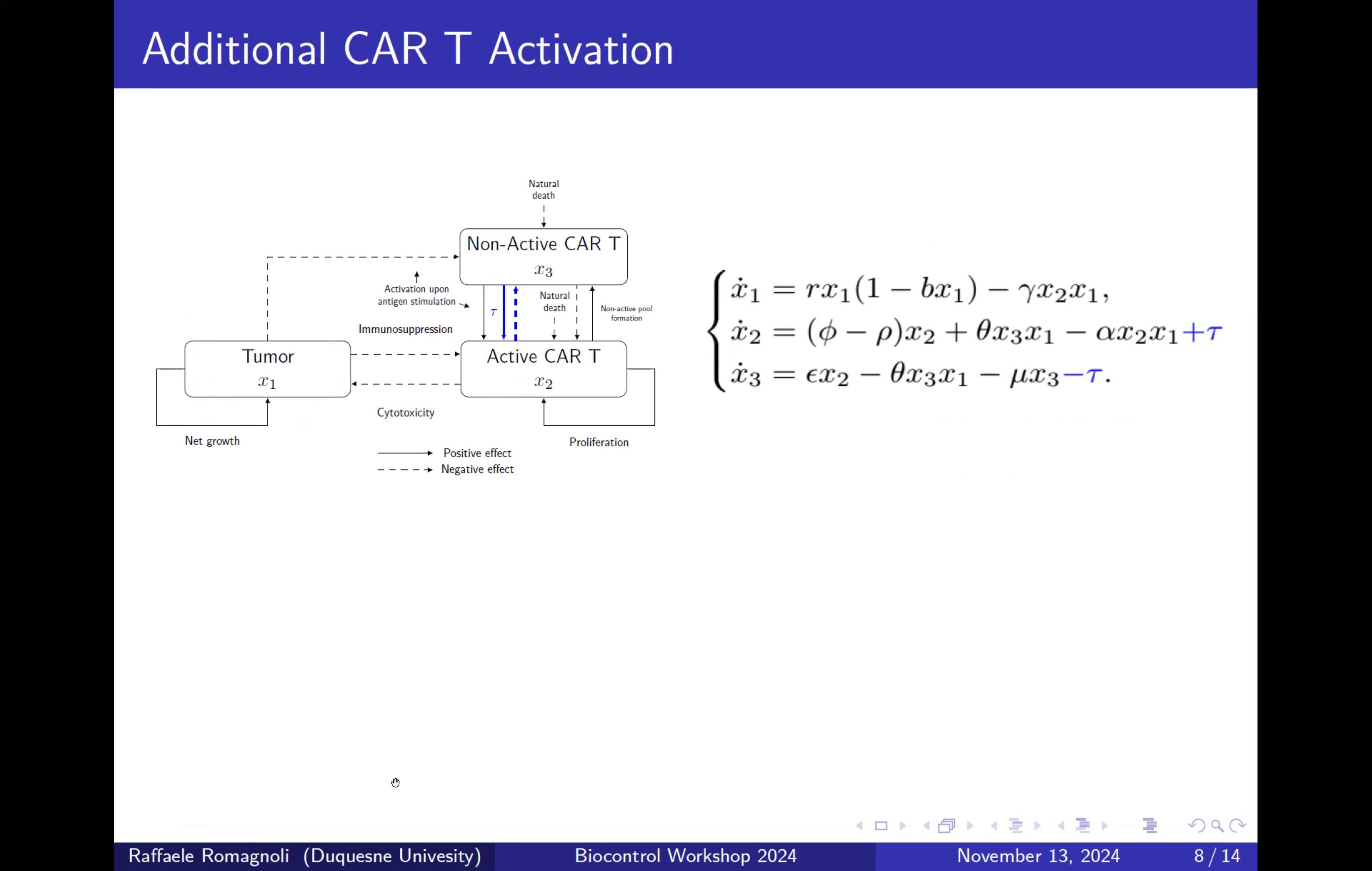How can we model the additional CAR-T activation? Here I try, in a very simple way, to consider an external activation input tau which is going to increase the number of active CAR-T cells and decrease the number of non-active CAR-T cells. Considering X3, the pool of non-active CAR-T cell as an external input, we focus more on the system made by the first two equations. Then we want to check if with tau we can guarantee that X1 is going to zero. We can drive the number of tumor cells to zero and guarantee asymptotic stability.